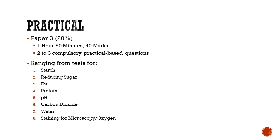Practical, also known as Paper 3, consists of 2 to 3 compulsory questions, ranging from tests for starch, reducing sugar, fat, protein, pH, carbon dioxide, water, and staining for microscopy, or oxygen — all of which will be elaborated later on.